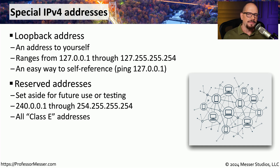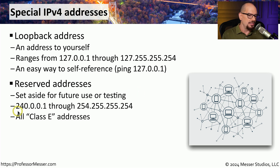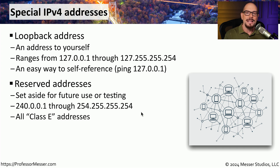Loopback is often used to confirm that your local IP stack is working properly. We also have a range of IP addresses set aside as reserved addresses — a range that should never be assigned to other devices, reserved for future use or testing. This range is 240.0.0.1 through 254.255.255.254. Anything that is a Class E address is also a reserved address.